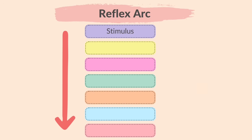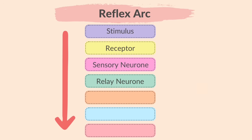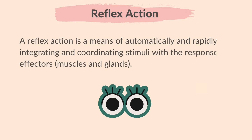Here's a simple diagram to show the reflex arc. The stimulus is detected by a receptor and converted into an electrical impulse. The electrical impulse travels along the sensory neuron, then passes on to the relay neuron, which connects to the motor neuron. The motor neuron carries the impulse to the effector, and the effector carries out the response. Therefore, a reflex action is a means of automatically and rapidly integrating and coordinating stimuli with the responses of effectors, i.e. muscles and glands.